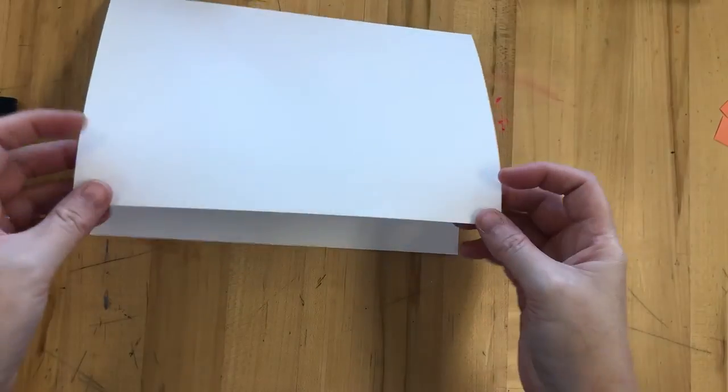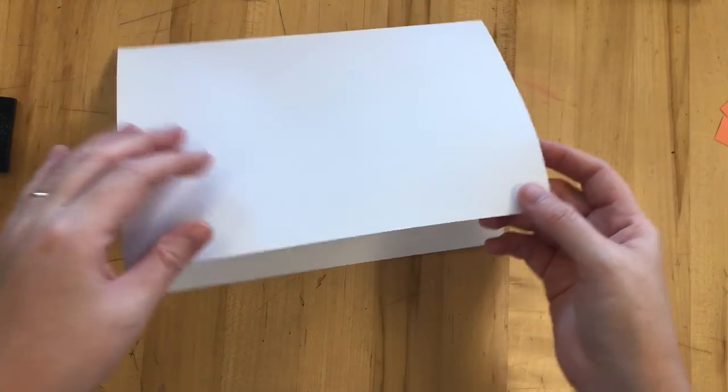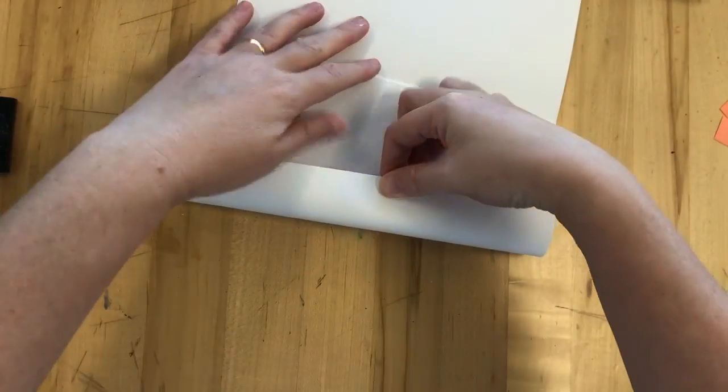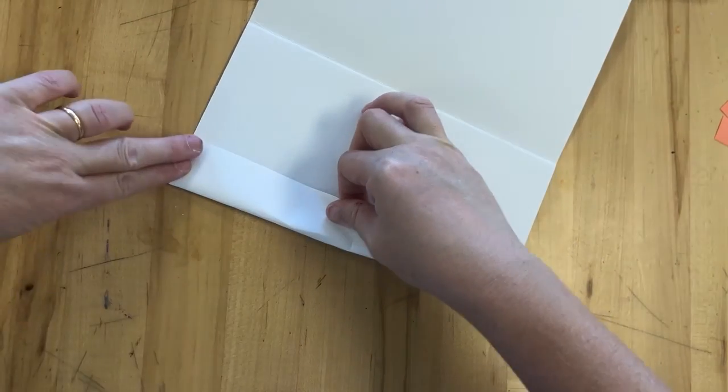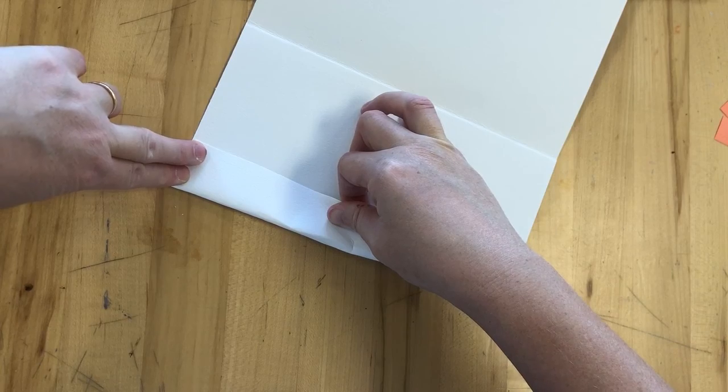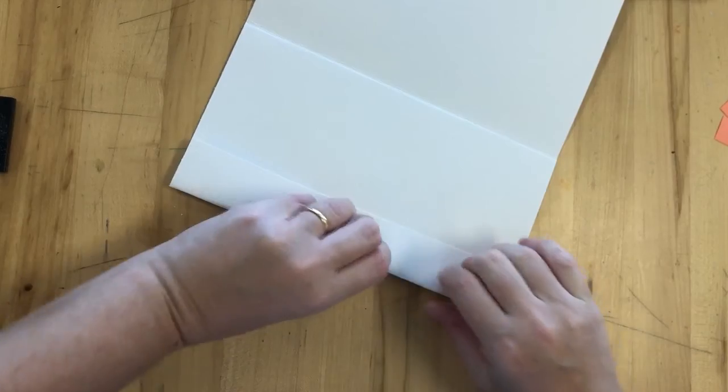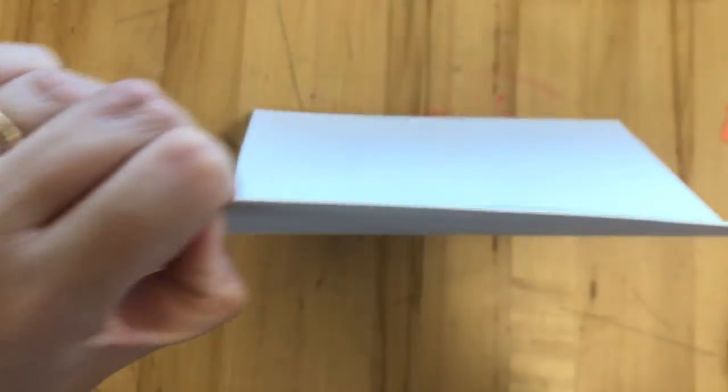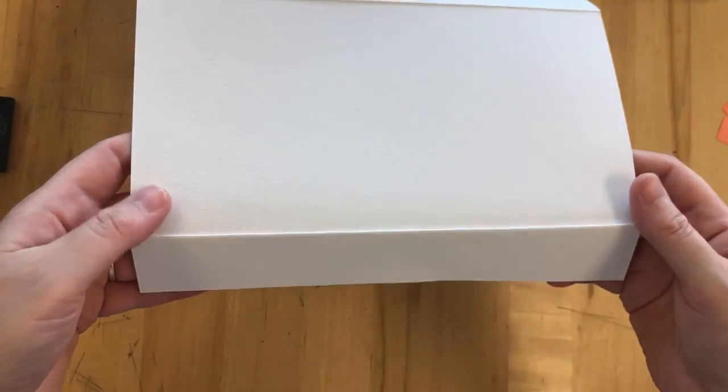The next thing I'm going to do is fold kind of a little canopy that's going to go over the front of the shop. So it's going to be about, let's say two fingers wide. So I folded a little canopy here.